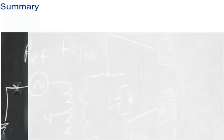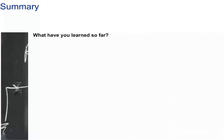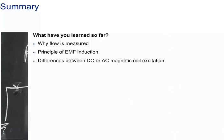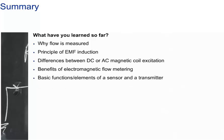Let's summarize this learning module. You have learned why flow is measured, the principle of EMF induction, the differences between DC and AC magnetic coil excitation, the benefits of electromagnetic flow metering, and the basic functions and elements of a sensor and transmitter, as well as installation conditions.